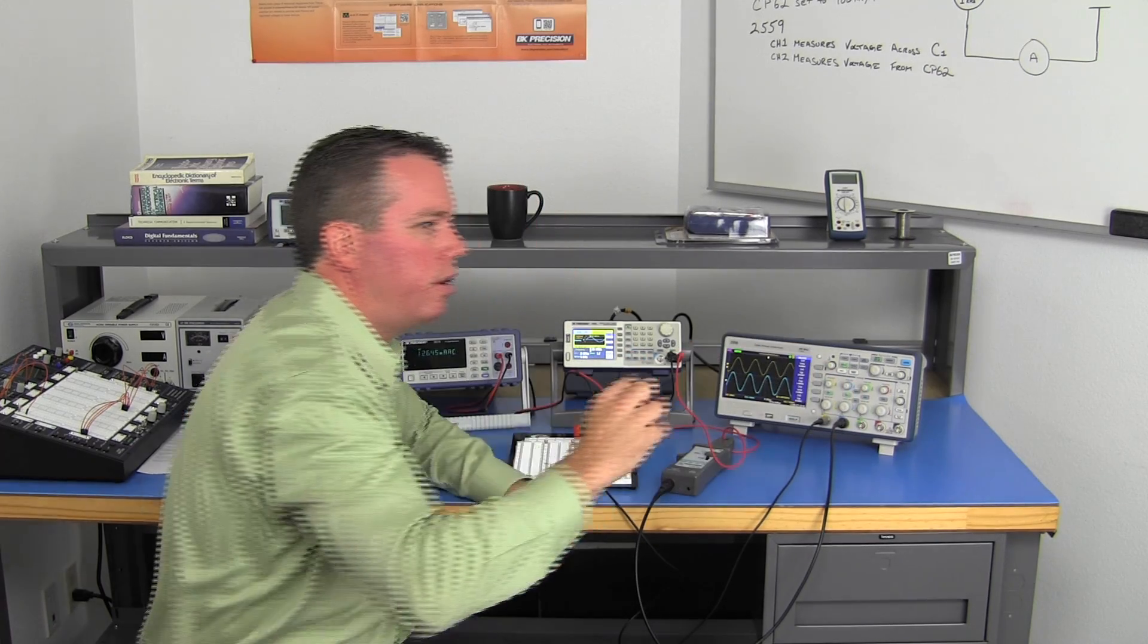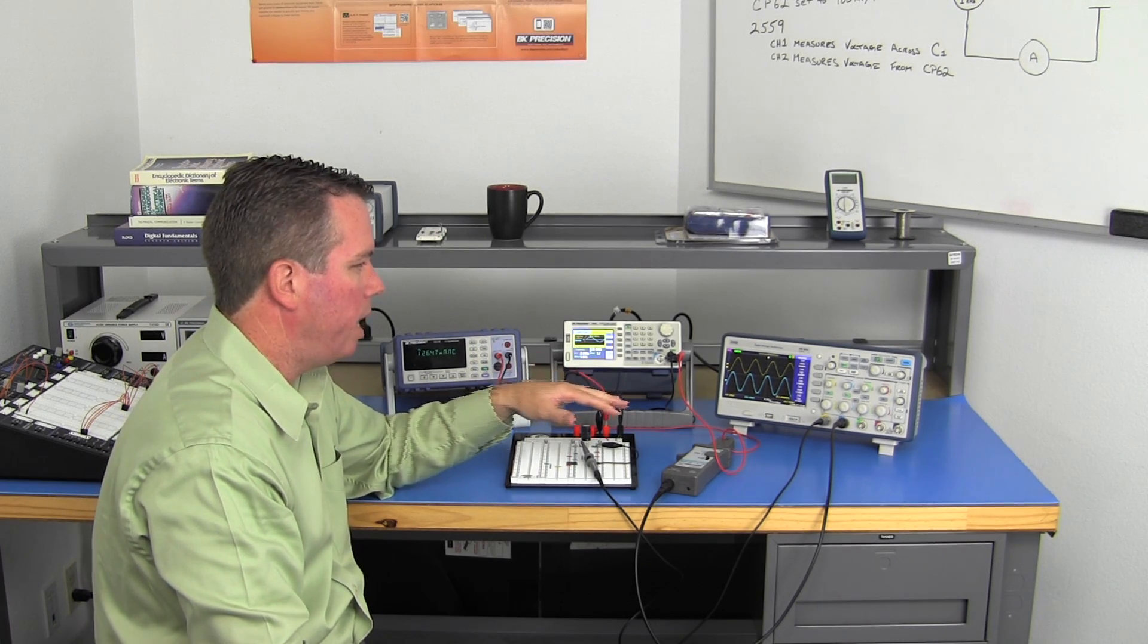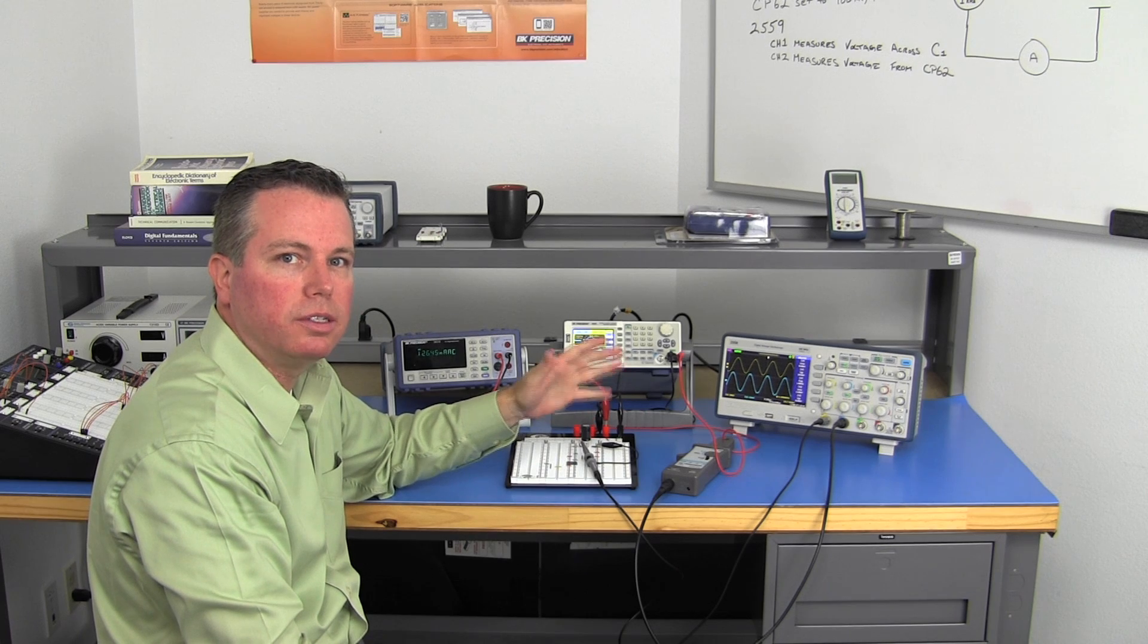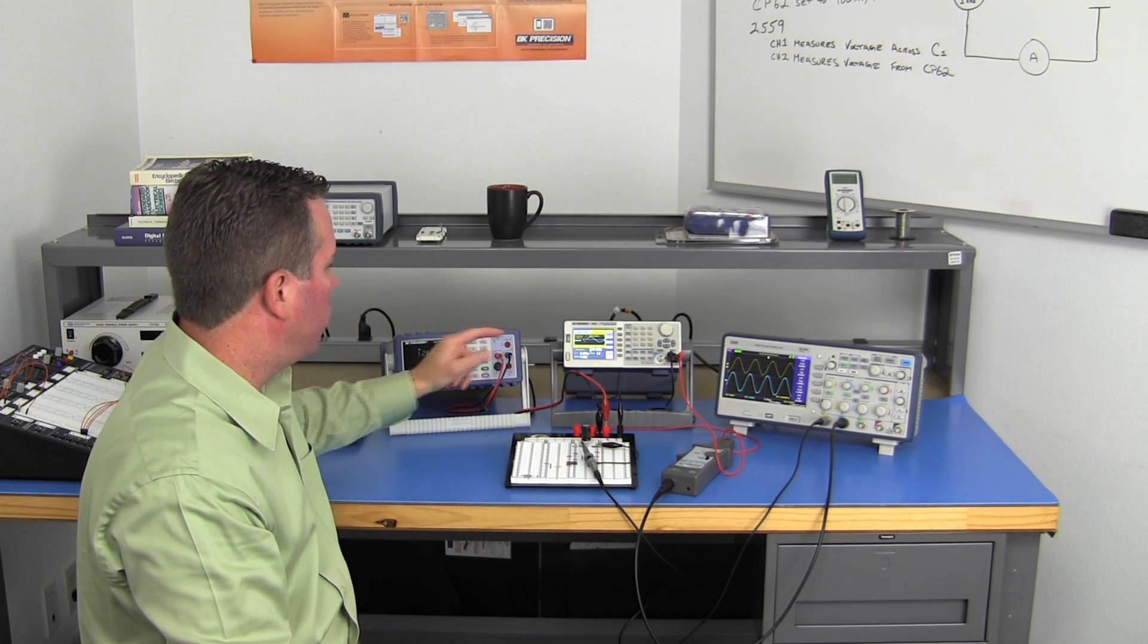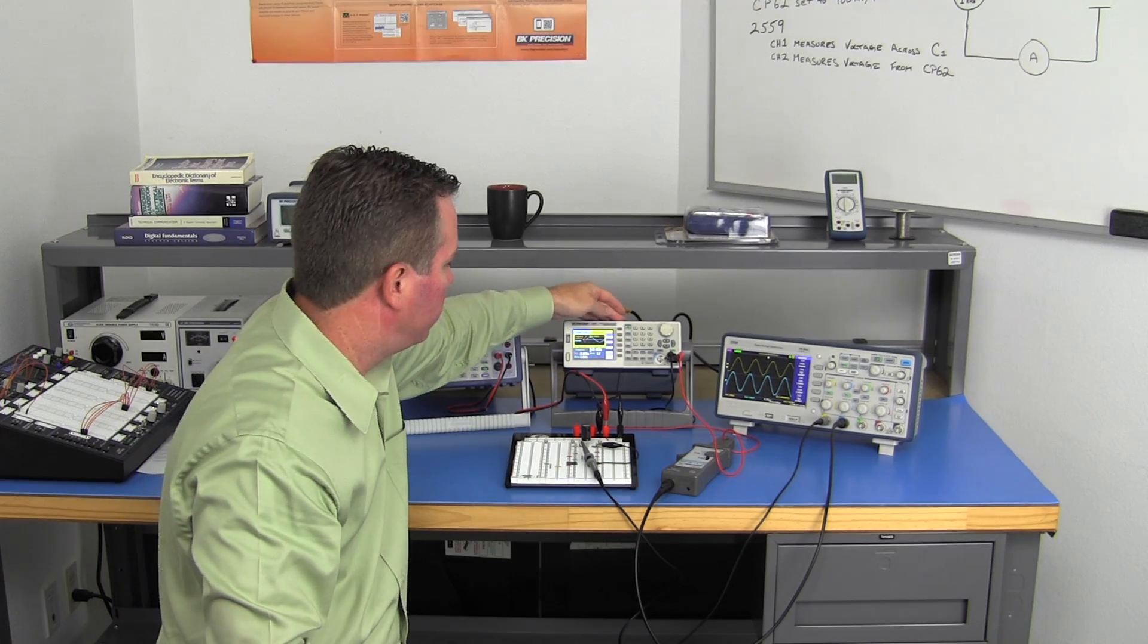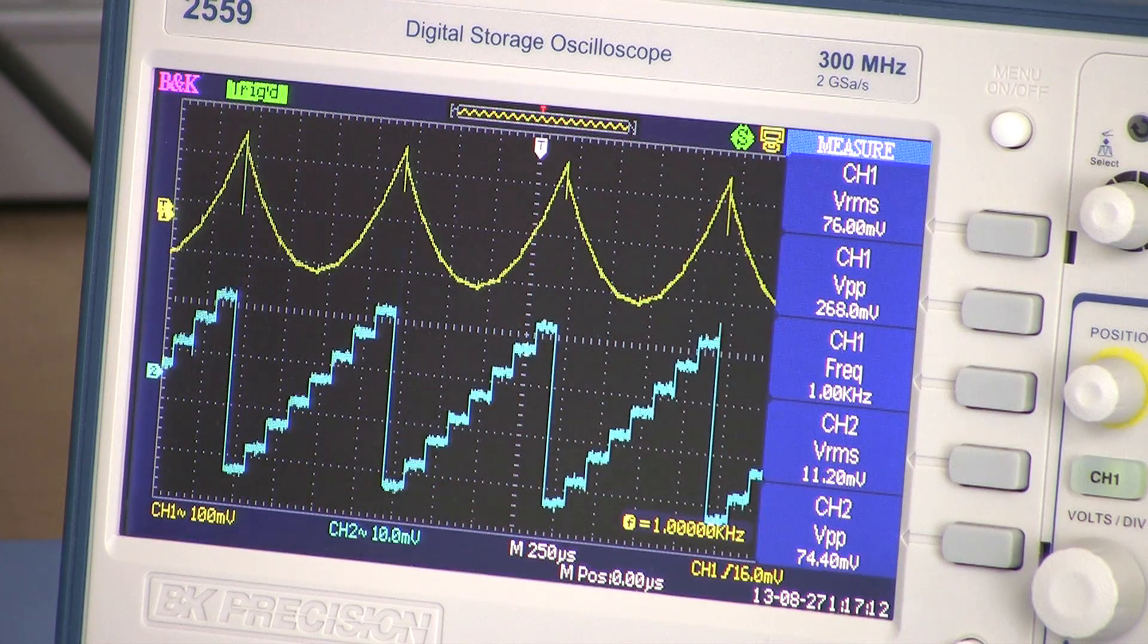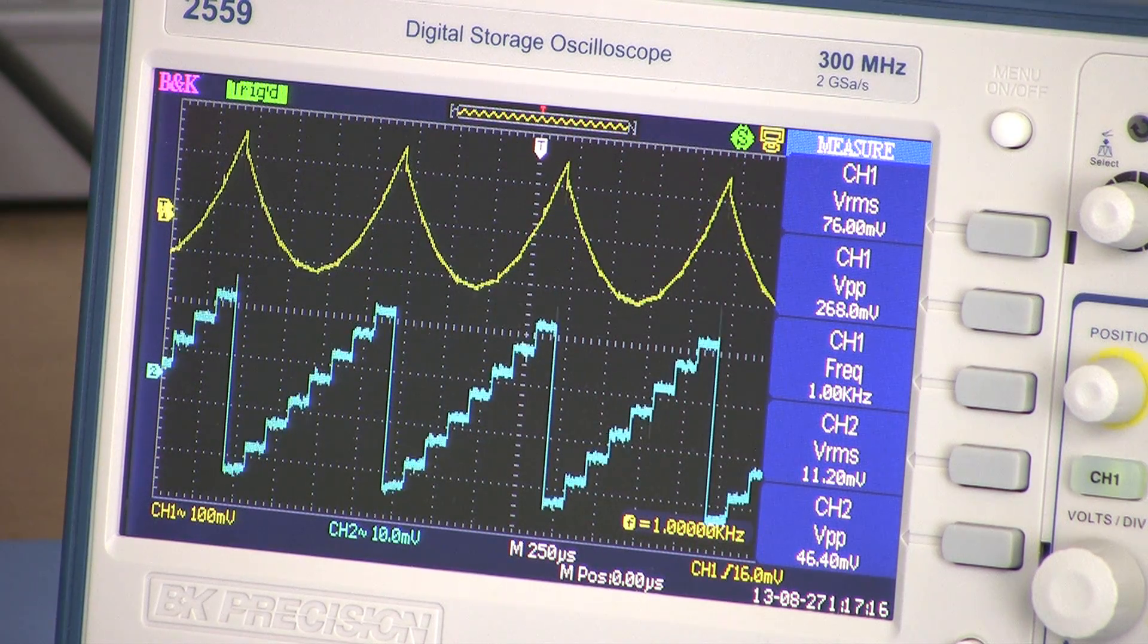So one other benefit that I mentioned earlier is that you're not only able to measure the current of the circuit, but also actually see the waveform, the current waveform. So what I'm going to do is take the signal generator and change it from sine wave to some arbitrary waveform, which in this case happens to be a stepped ramp waveform.